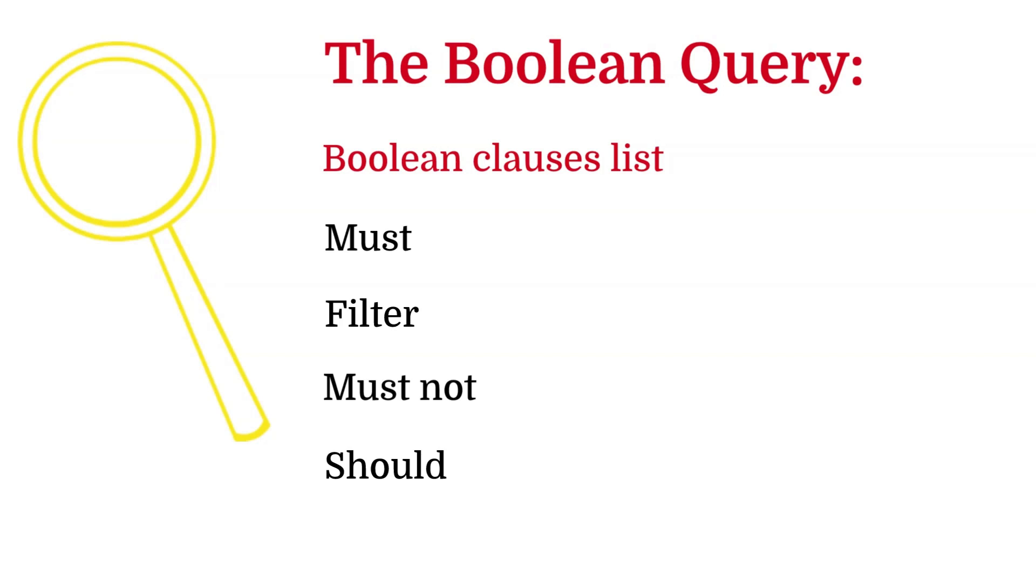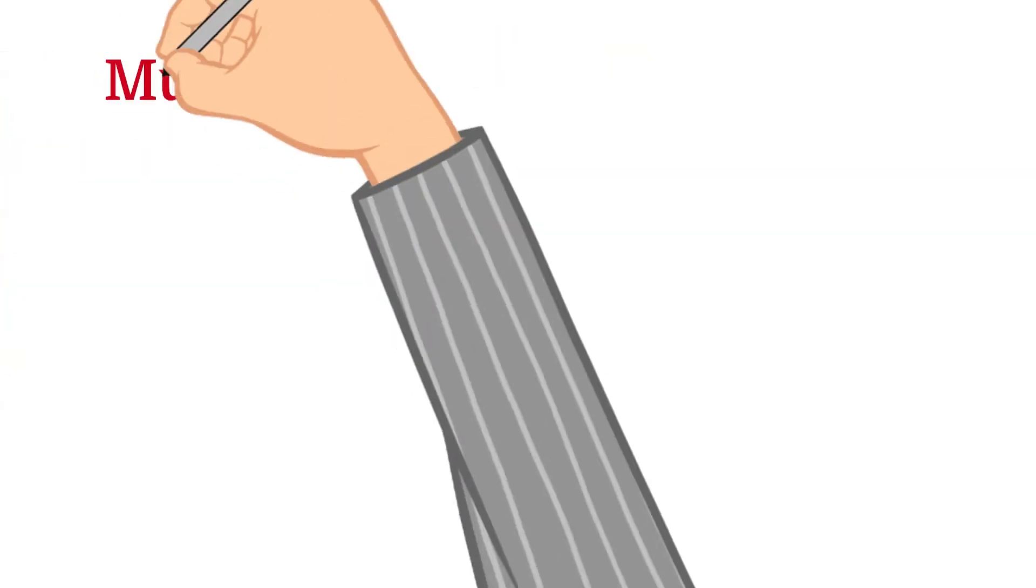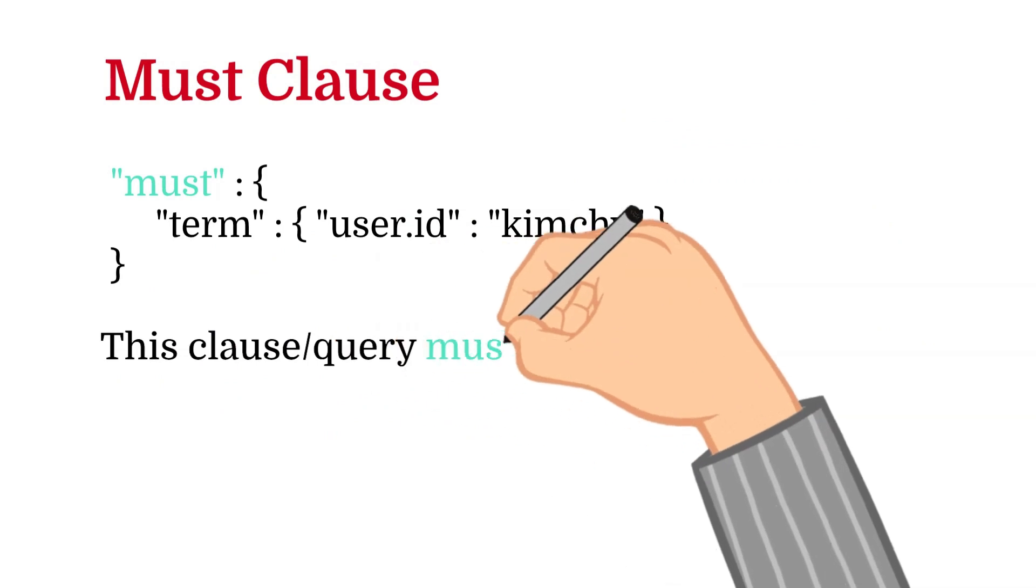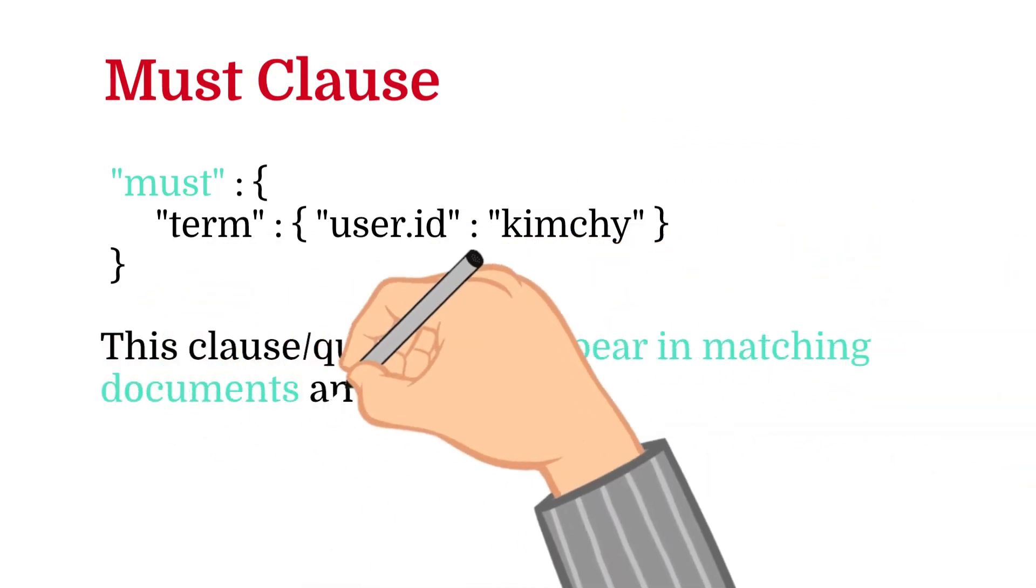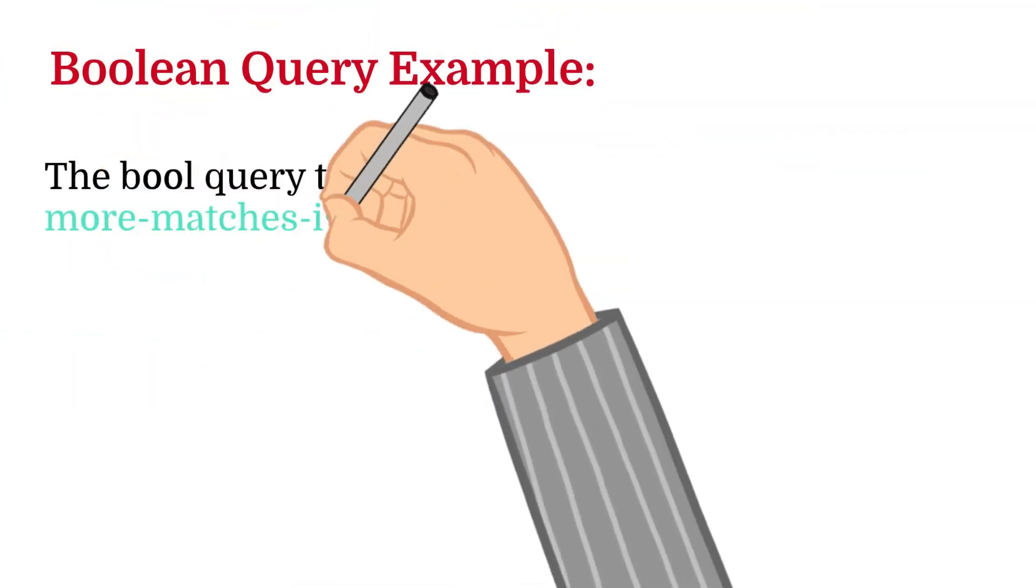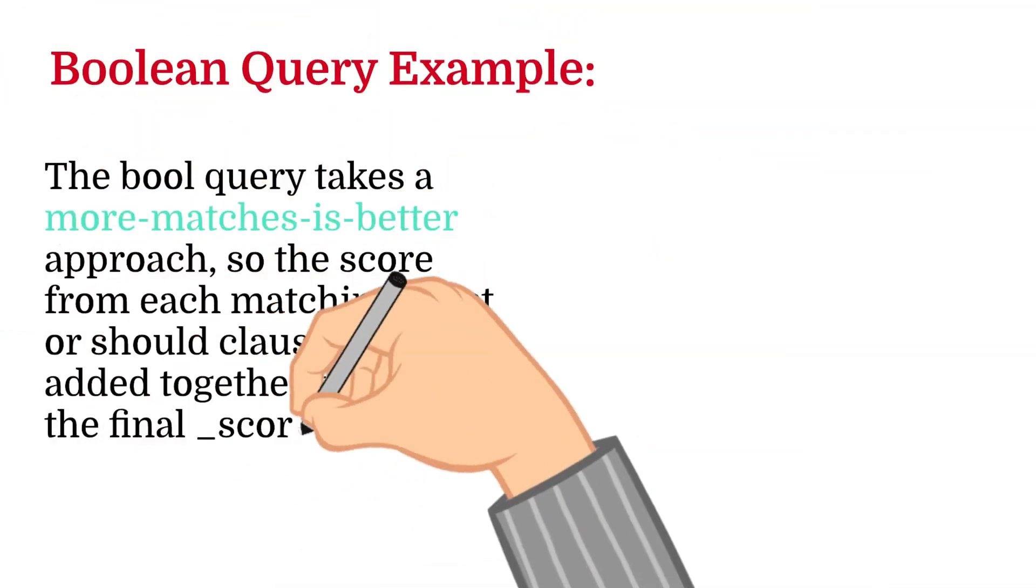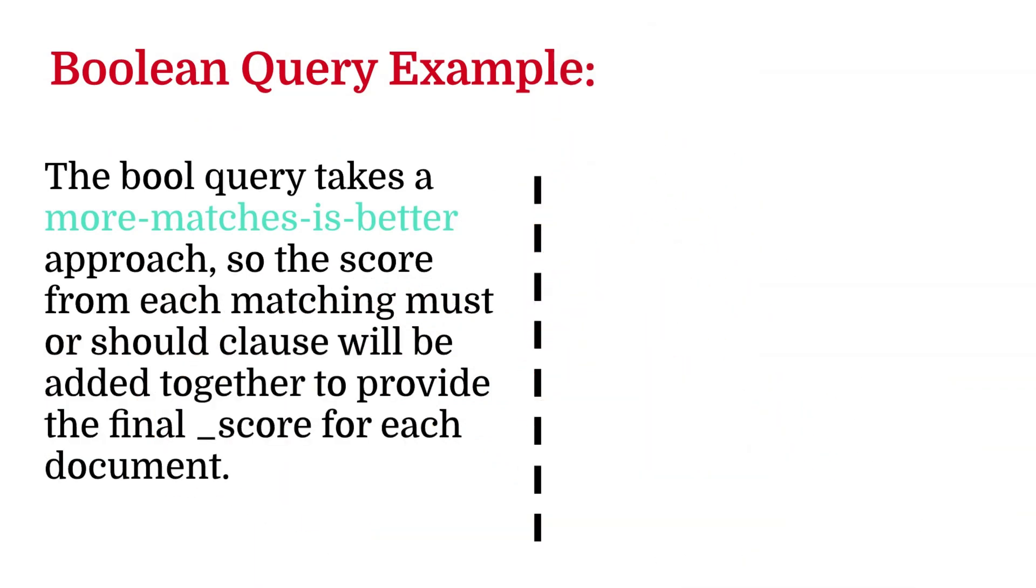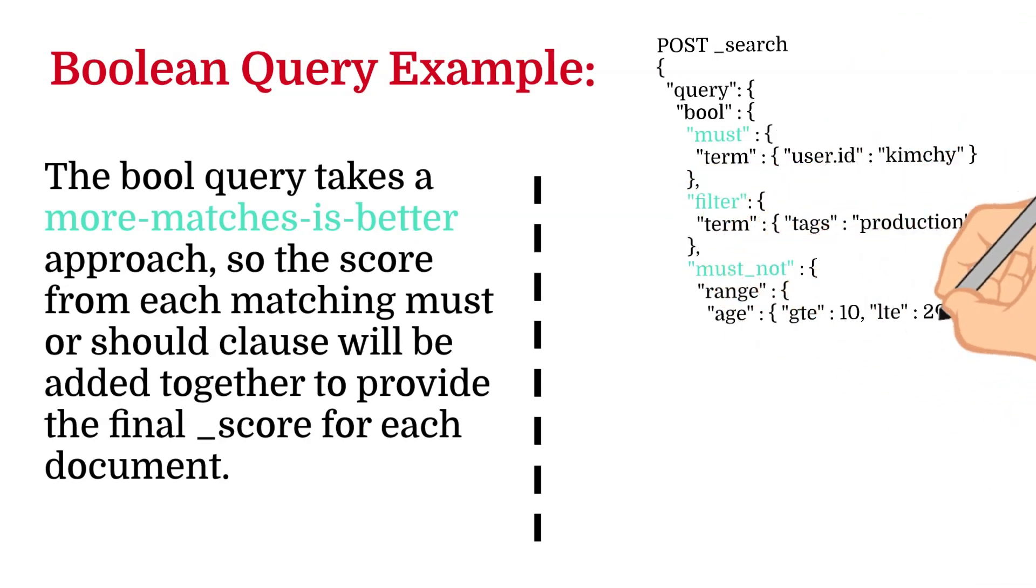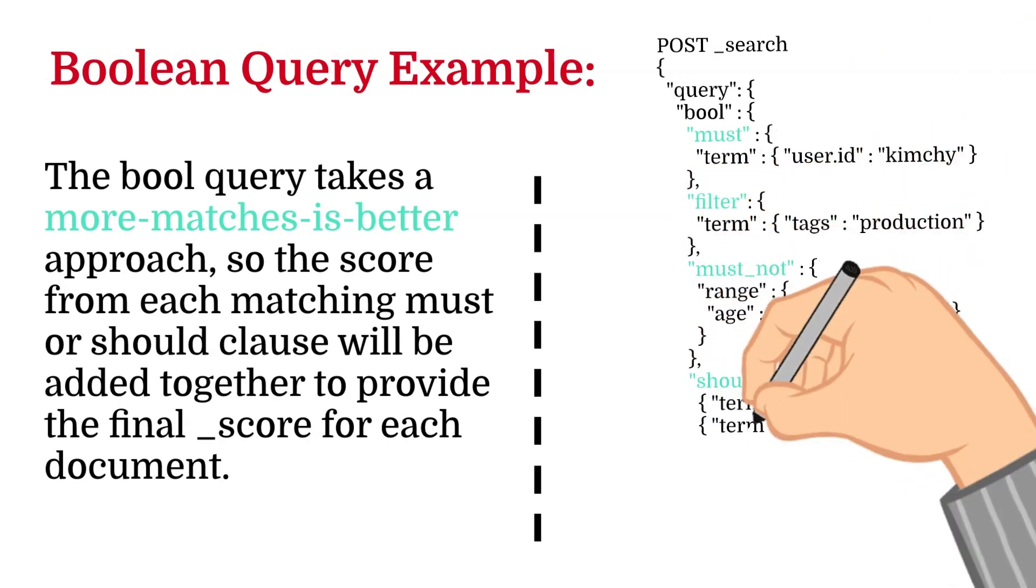The list of boolean clauses are as follows. The first clause is known as must. The must clause or query must appear in the matching documents and thus it contributes to the score. The boolean query takes a more matches is better approach. The score from each matching must or should clause will be added together to provide the final score for each document.